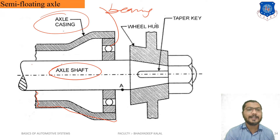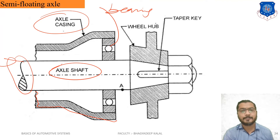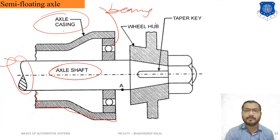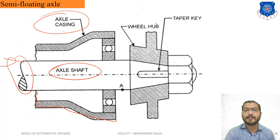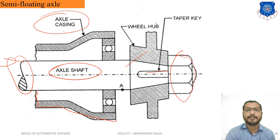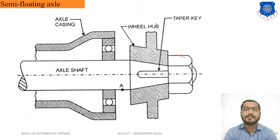One end of the axle shaft is connected to the differential by the side thrust gear. The other end is connected to the wheel hub, done using a bolt mechanism and a taper key to connect the shaft and wheel hub. This is the construction of the semi-floating axle.